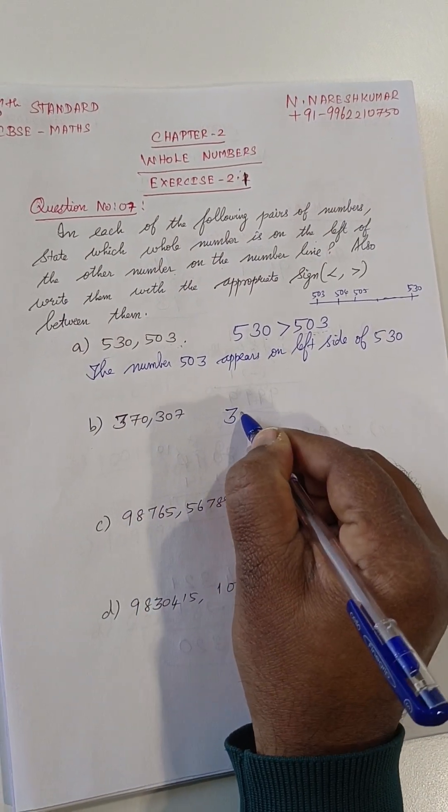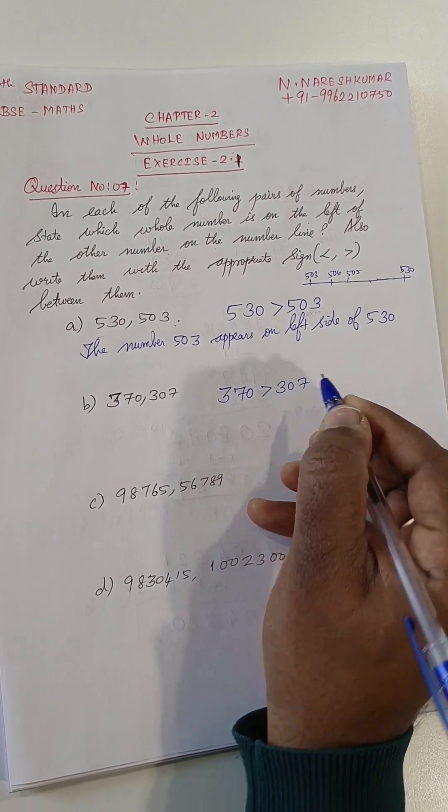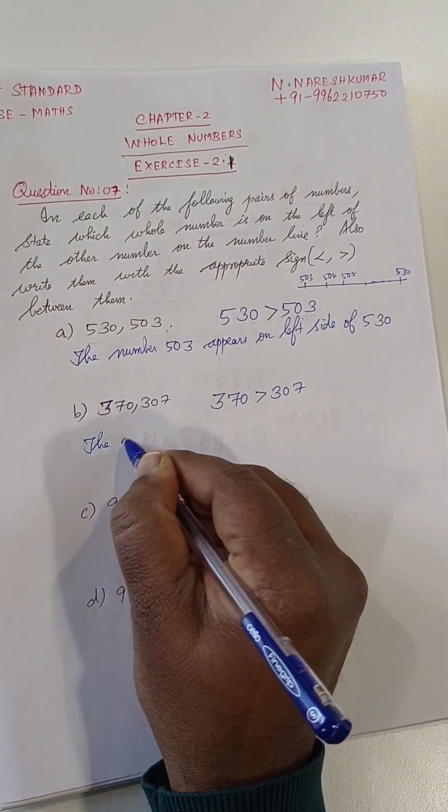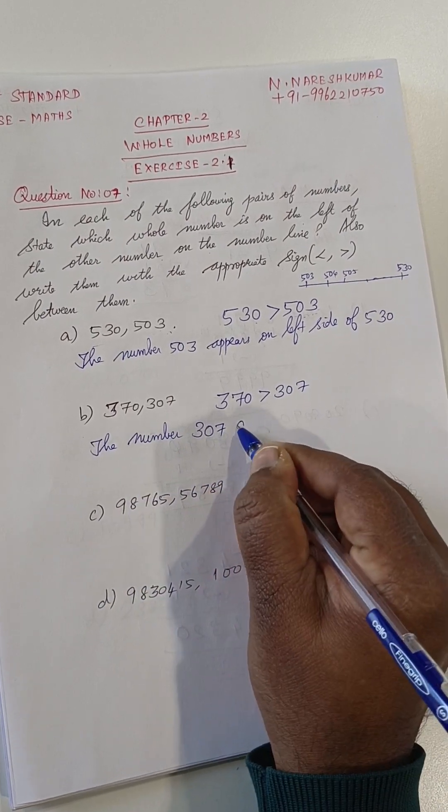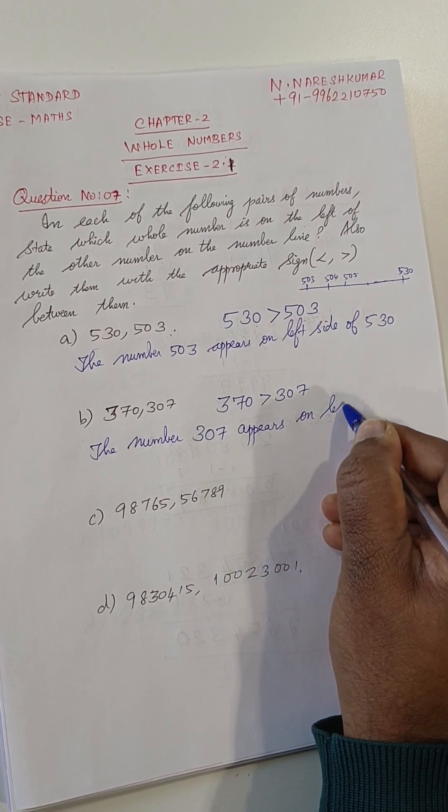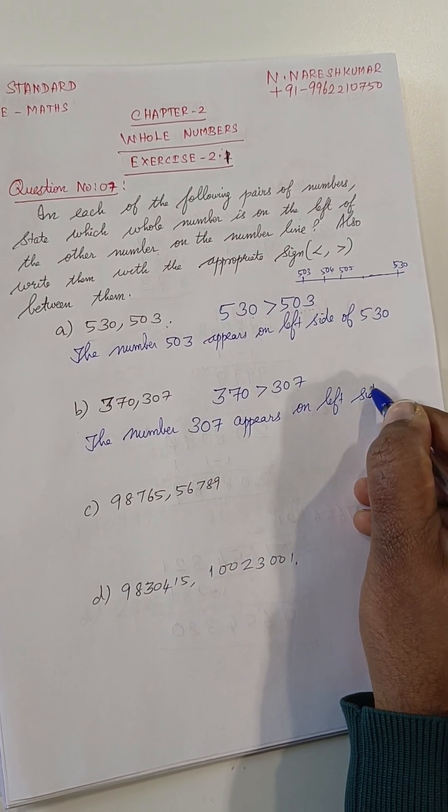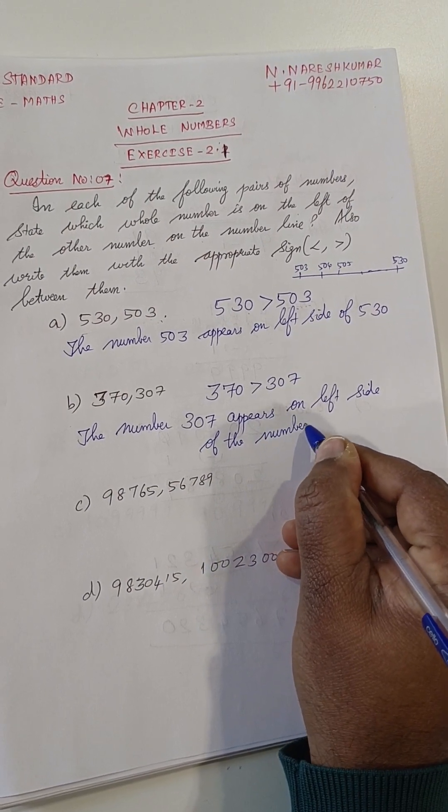Then next, 370 is greater than 307. So, the number 307 appears on the left side of the number 370.